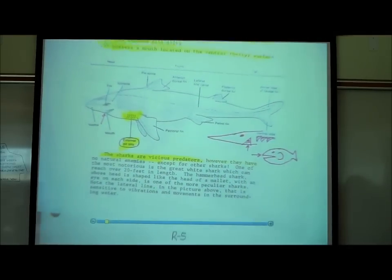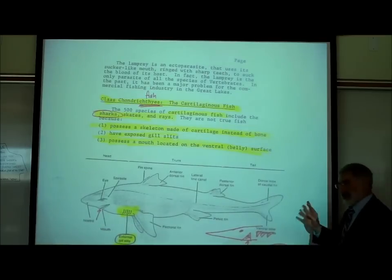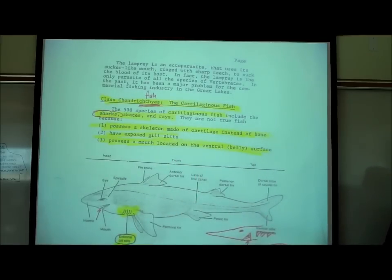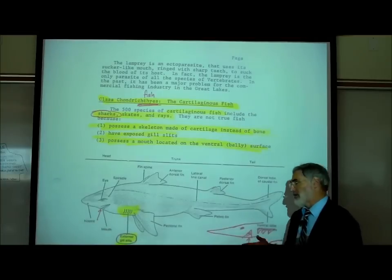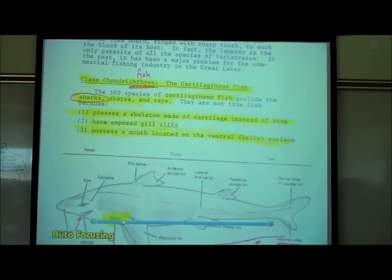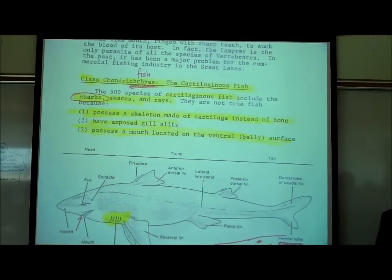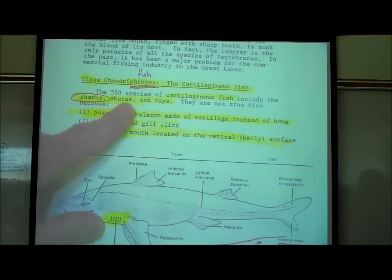On R5, this is the only other phylum where I'm going to divide it into classes. The two phyla I'm dividing into classes are Arthropoda — which included crustaceans, spiders, and insects — and the vertebrates. The first class is Chondrichthyes. Ichthyes is Greek for fish, and chondro means cartilage — so these are the cartilaginous fish, because their skeleton is made up of cartilage and not bone.